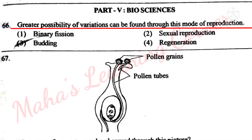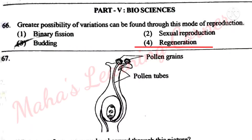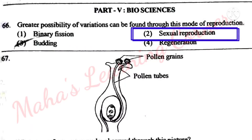Greater possibility of variations can be found through this mode of reproduction. Options: Binary fission, Sexual reproduction, Budding, Regeneration. Correct answer: Option 2 – Sexual reproduction. Greater possibility of variations can be found through sexual reproduction.